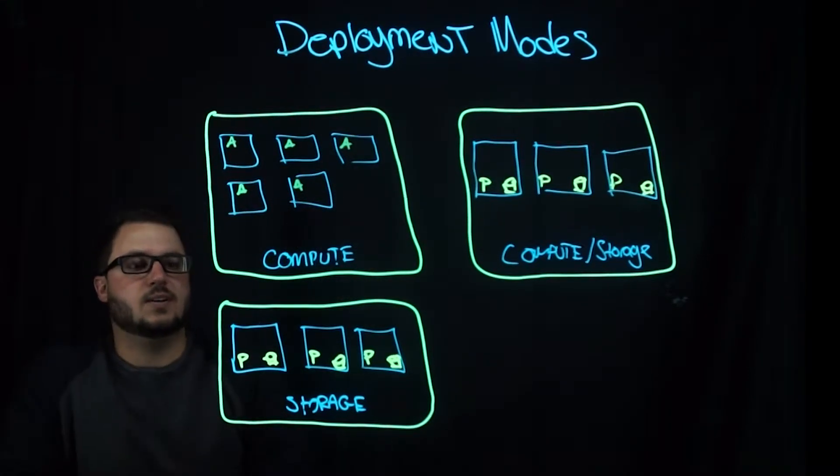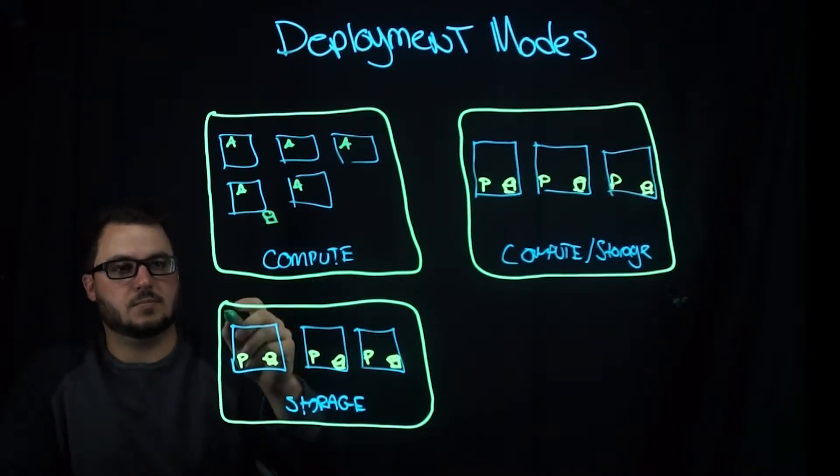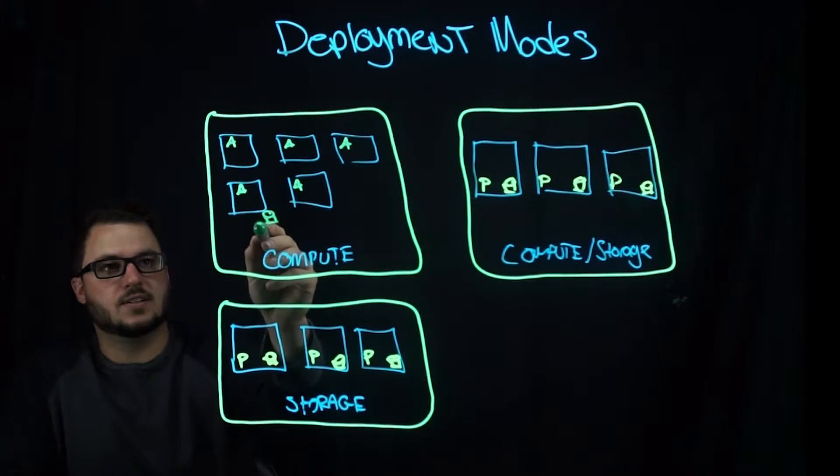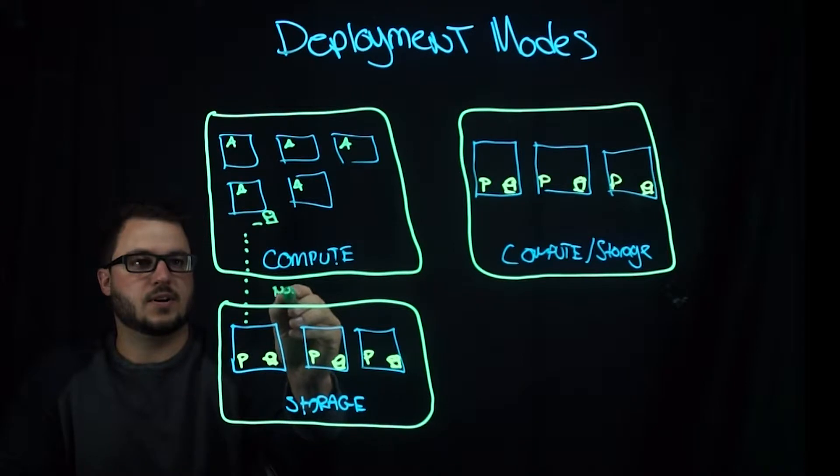If they want to use a disk and provision it from Portworx, the IO will go over the network.